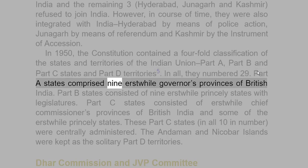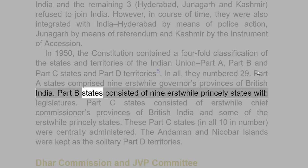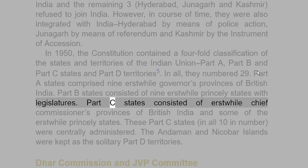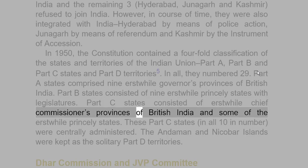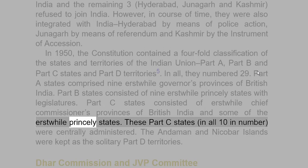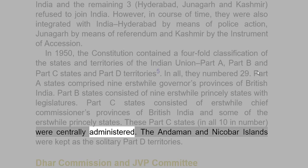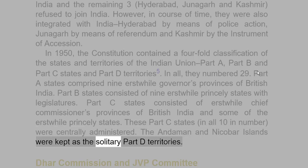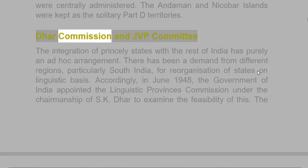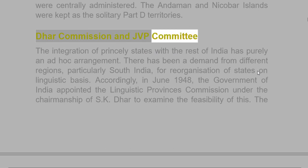Part A states comprised nine erstwhile governors' provinces of British India. Part B states consisted of nine erstwhile princely states with legislatures. Part C states consisted of erstwhile chief commissioners' provinces of British India and some of the erstwhile princely states. These Part C states, ten in number, were centrally administered. The Andaman and Nicobar Islands were kept as the solitary Part D territories.